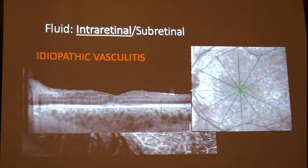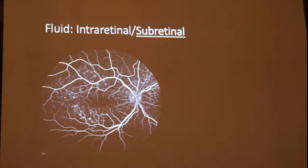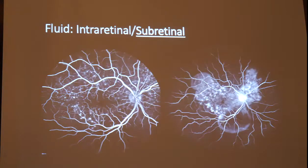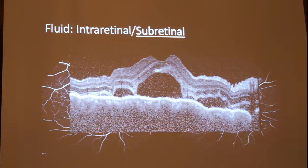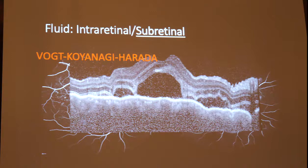However, a subset of patients with retinal inflammation may present with subretinal fluid. This patient presented with dots that were hyperfluorescent on FA and showed late pooling on fluorescein angiography. The OCT revealed a very thick featureless choroid, wavy choroid, with multiple pockets of subretinal fluid — and this is a case of Vogt-Koyanagi-Harada disease.